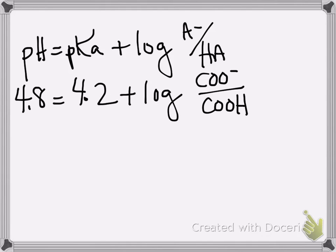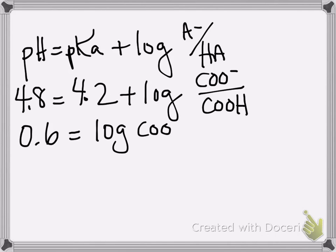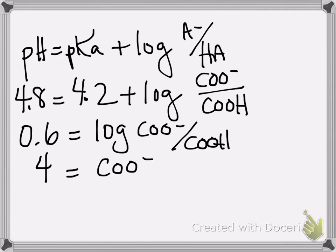You subtract 4.2 from 4.8 and get 0.6, which equals the log of COO⁻ over COOH. You know that there's a 1 in the denominator, so you can write that in there.